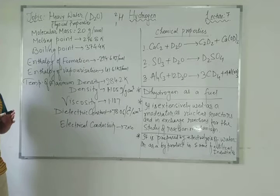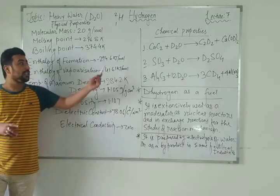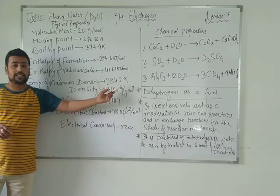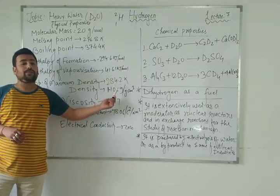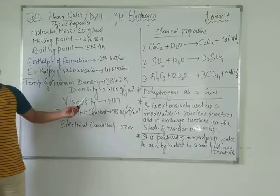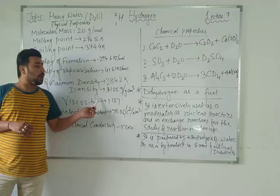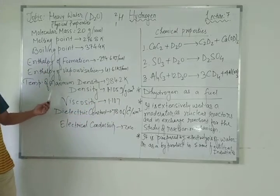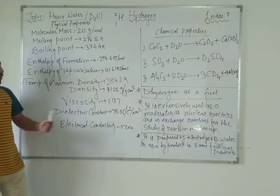The melting point of water is 273 K; for D₂O it is 276.8 K. The boiling point of water is 373 K; for D₂O it is 374.4 K. The enthalpy of formation is −294.6 kJ/mol. Enthalpy of vaporization is 41.6 kJ/mol. Temperature of maximum density is 284.2 K. Density of D₂O is 1.105 g/cm³, compared to water's density of 1 g/cm³.